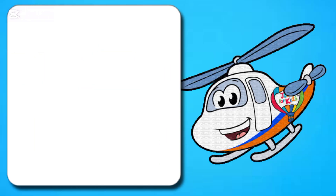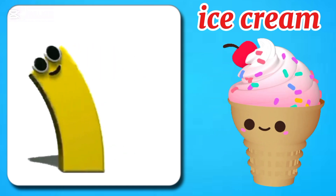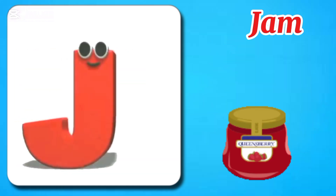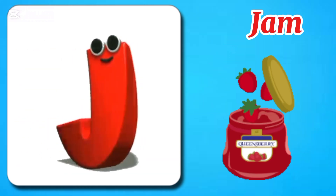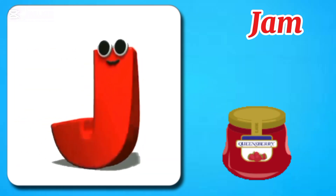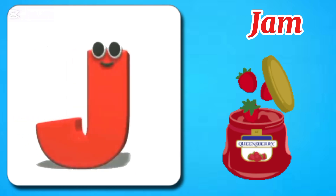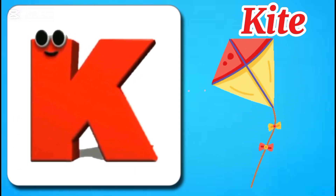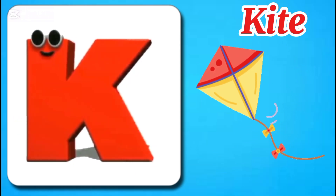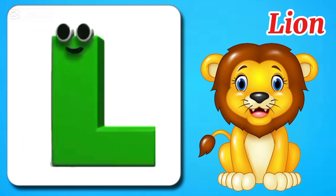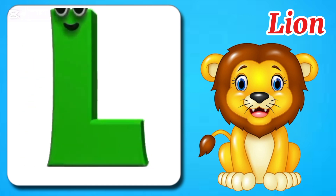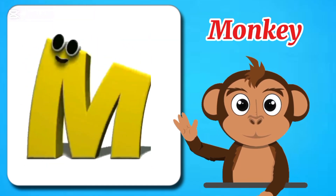I is for ice cream, I-I-ice cream. J is for jack, B-E-jack. K is for kite, kite, kite. L is for lion, lion.